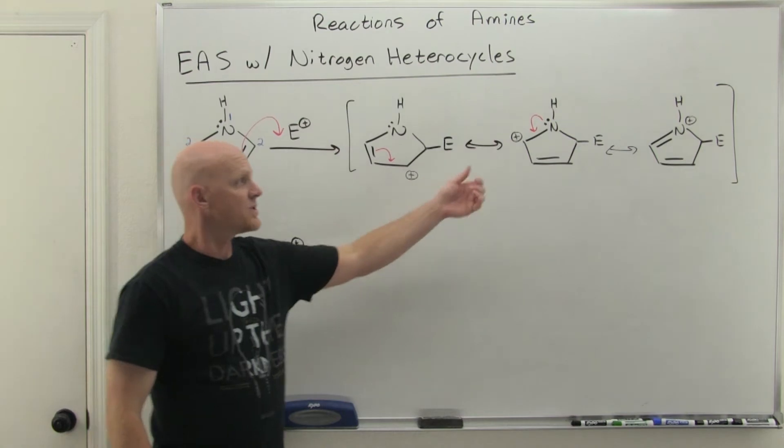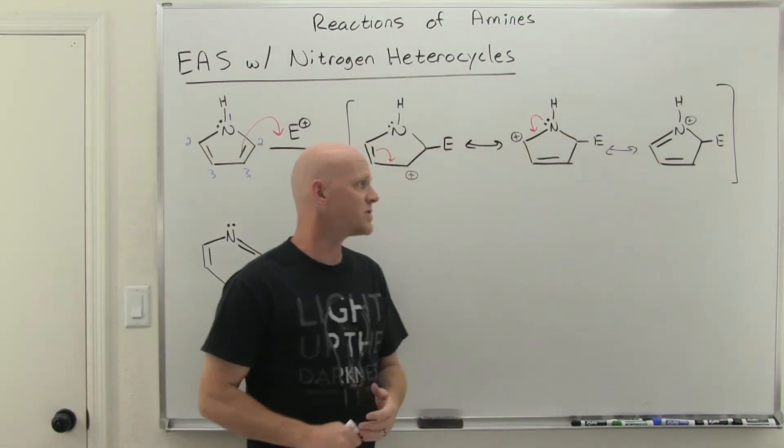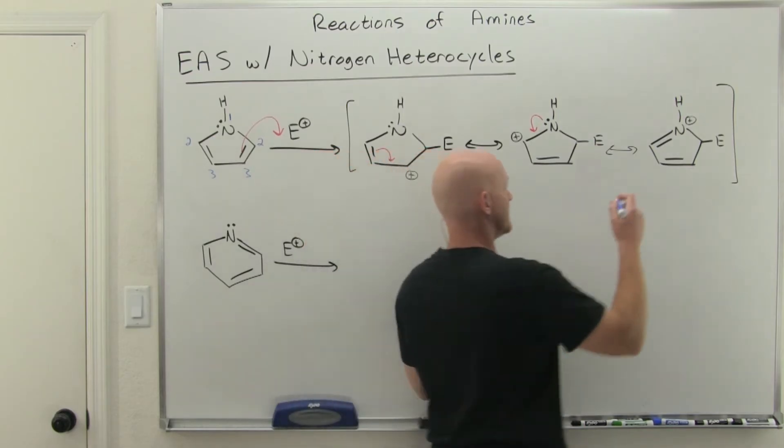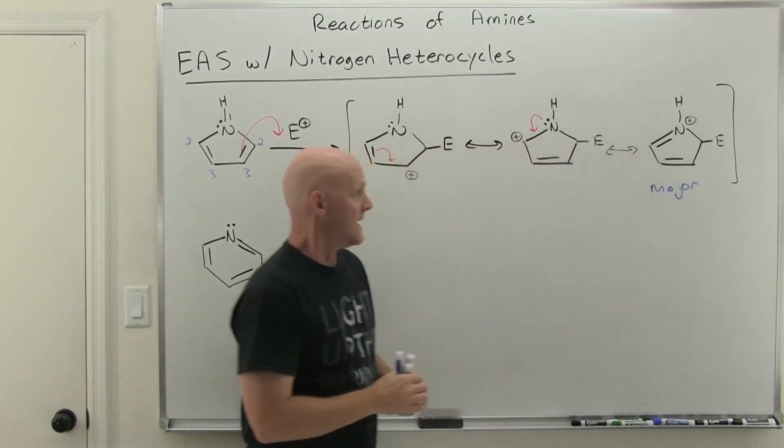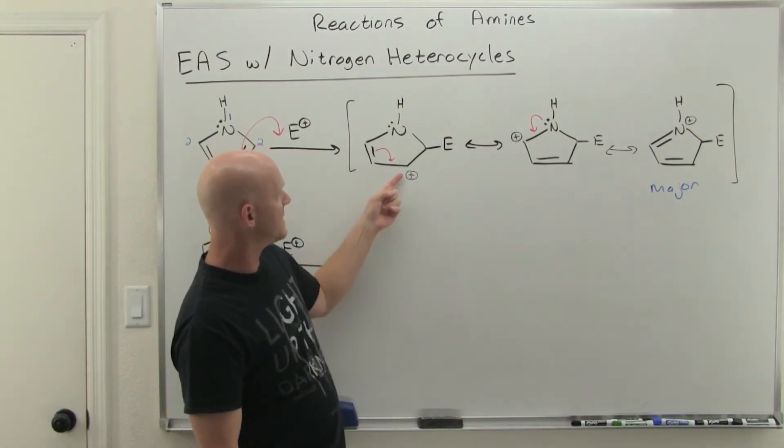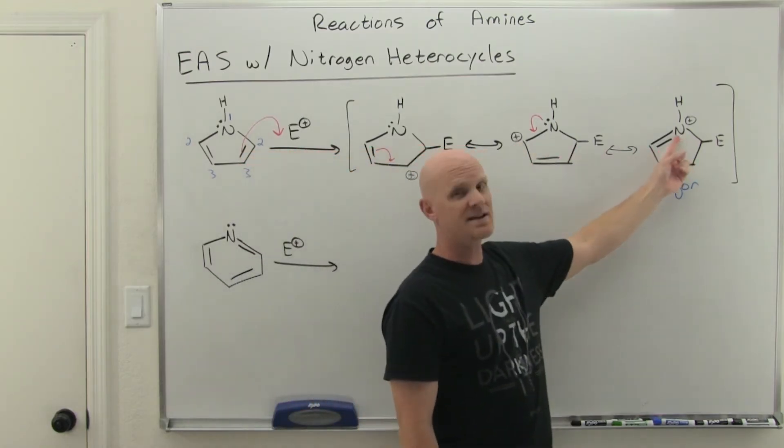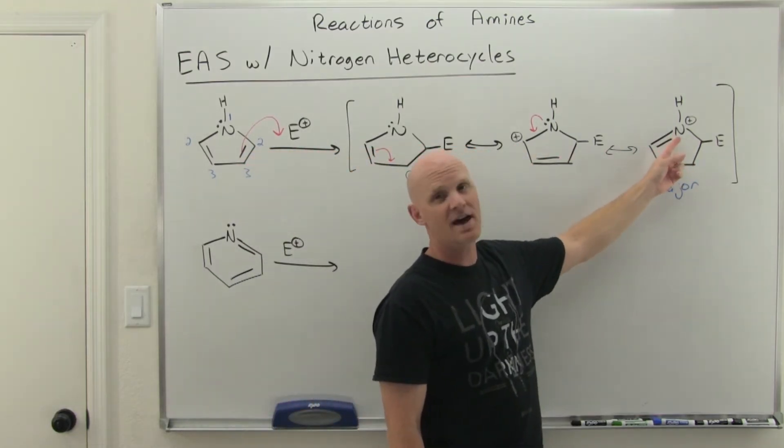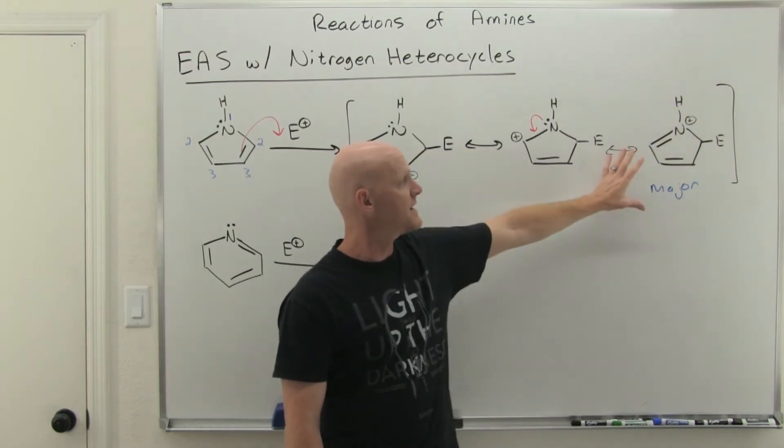And this is one away from the nitrogen who's got a lone pair. And so we'll get one more additional resonance structure here as well. That'll put the positive formal charge on the nitrogen. Cool. And so that's kind of the deal. We're going to get three resonance structures and even the nitrogen gets to share in on that partial positive charge. And it turns out that is the major resonance contributor.